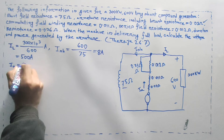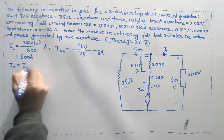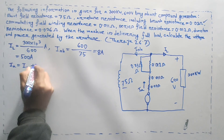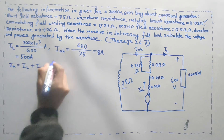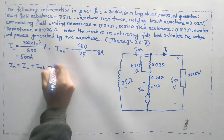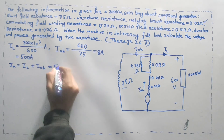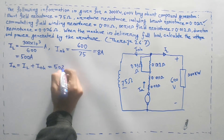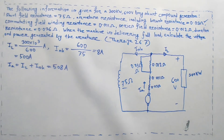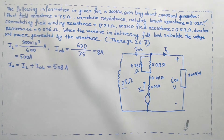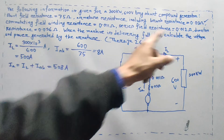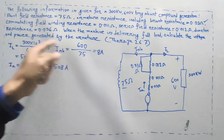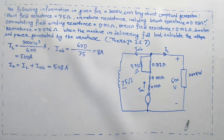The armature current I_a is equal to I_L plus I_sh, which is 500 plus 8, giving 508 amperes. This is the armature current.